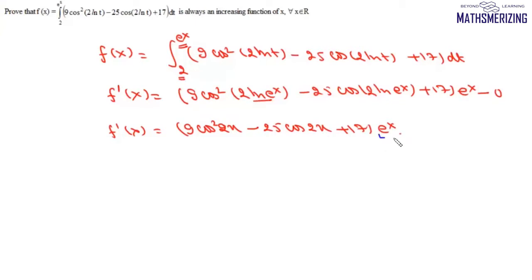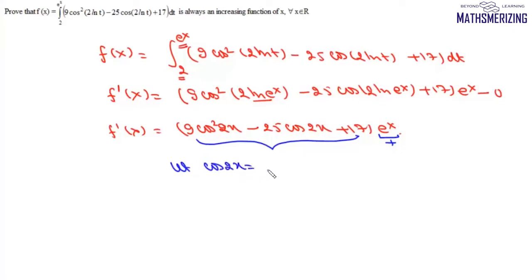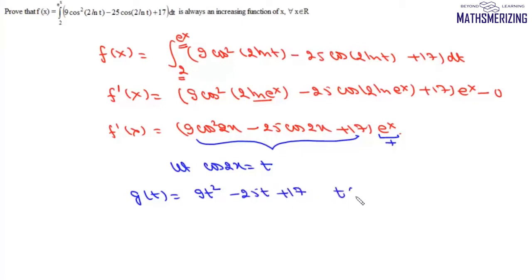Now eˣ is always positive, so we need to prove that the expression [9cos²(2x) - 25cos(2x) + 17] is also positive for all values of x. We let cos(2x) = t, and write this as g(t) = 9t² - 25t + 17, where t belongs to [-1, +1].